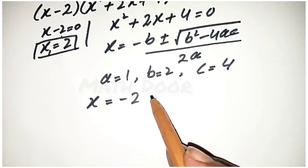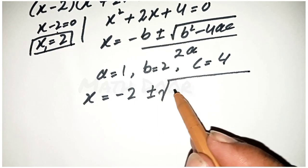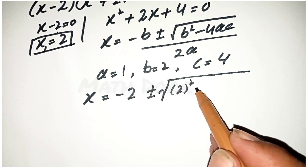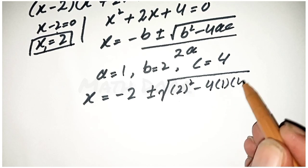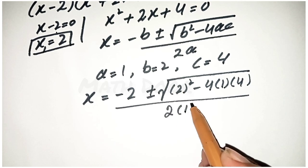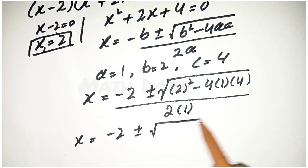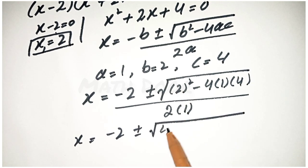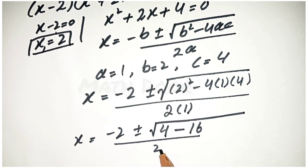Now: minus 2 plus or minus square root of 2 square minus 4, the value of a is 1 and the value of c is 4, over 2, with a equal to 1. In the next step, we have minus 2 plus or minus square root of 4 minus 16, over 2.